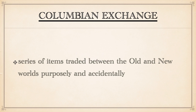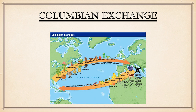The Columbian Exchange was a series of items traded between the Old and New World, purposely as well as accidentally. In many cases, both sides would benefit from that exchange. The Europeans' diet would get better as a result of many of the crops that would be introduced to them.